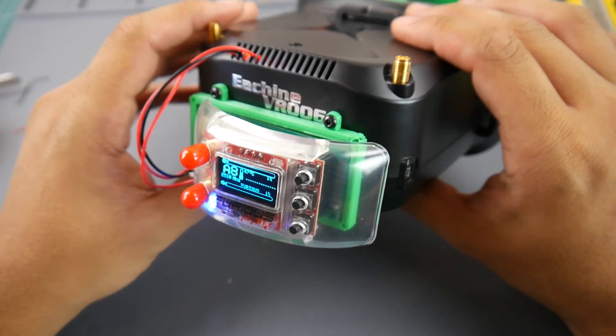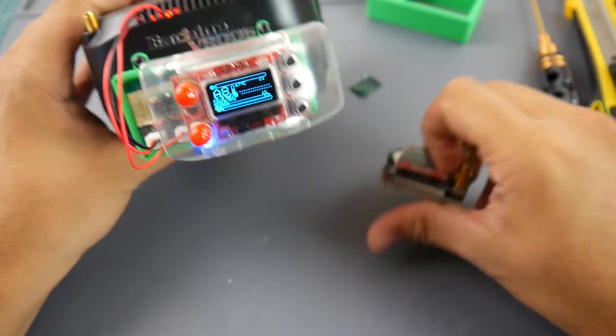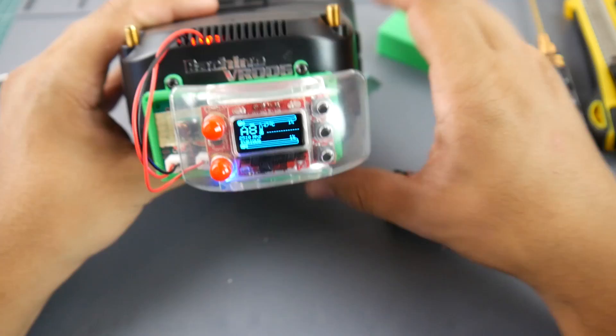In this video I'm going to show you how to mod the Eosin VR006 with a Fatshark module. That'll take 5.8 gigahertz with a nice little cover and also the 2.4 gigahertz Fatshark modules.